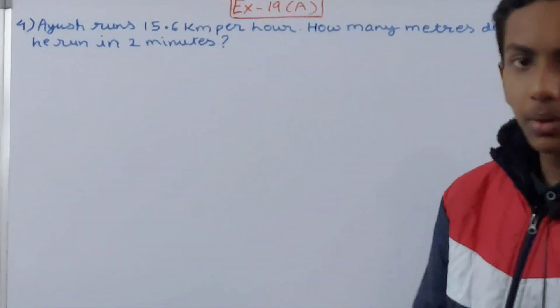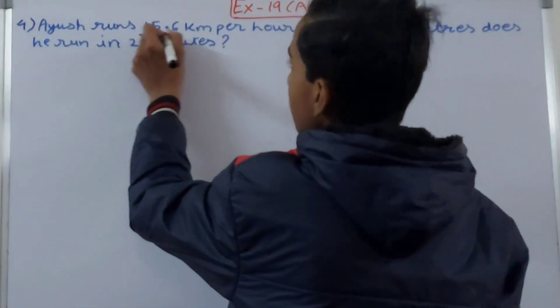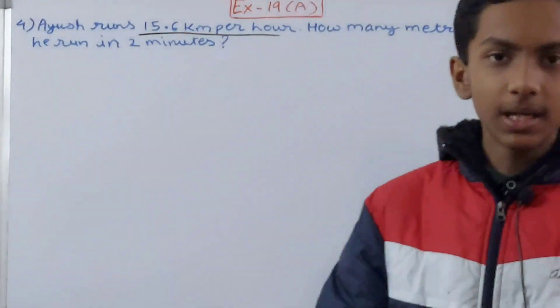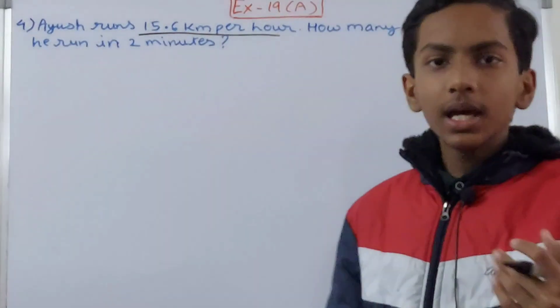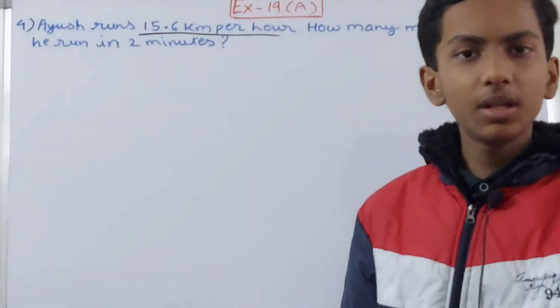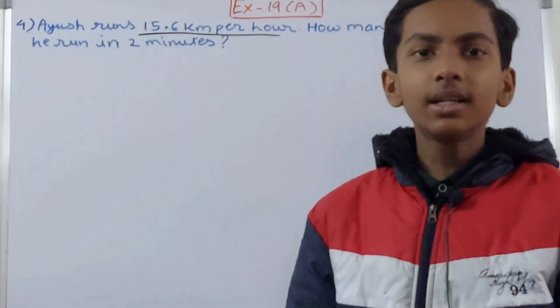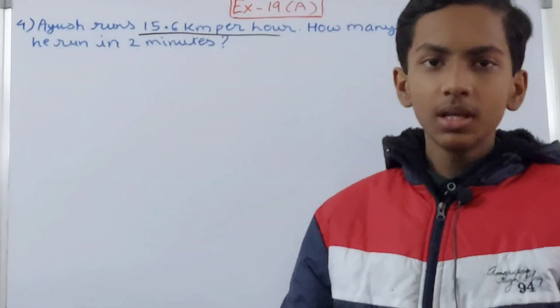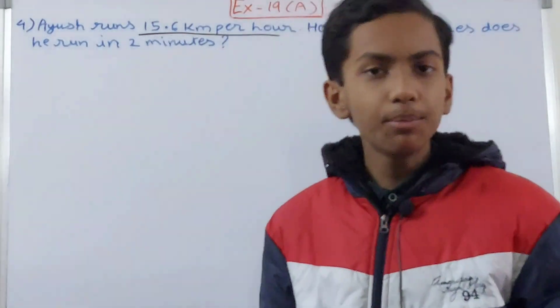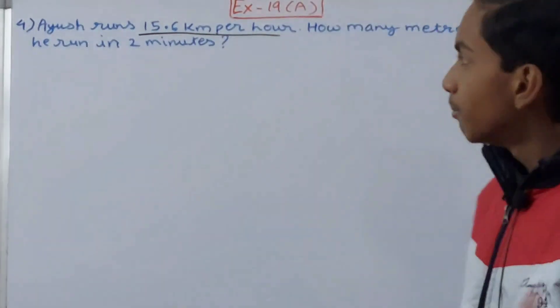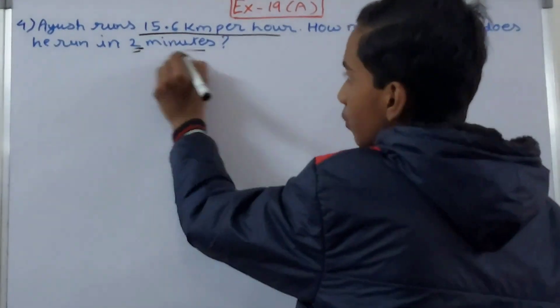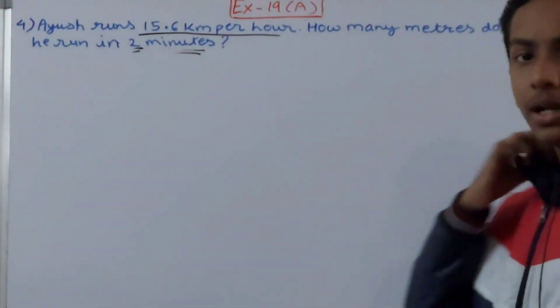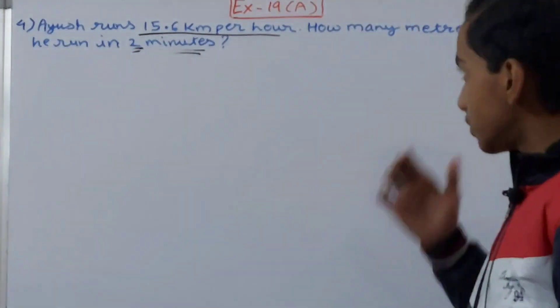It's quite simple. See, he runs 15.6 kilometers in one hour. Per hour means one hour. Basically in the second hour also he will run 15.6 kilometers, and combined first and second hour will be 15.6 multiplied by two. But what it is asking us is not for two hours but for two minutes. So we have to tell for two minutes.